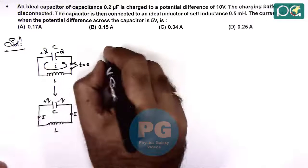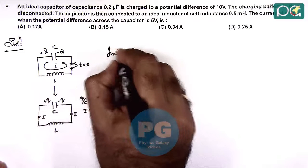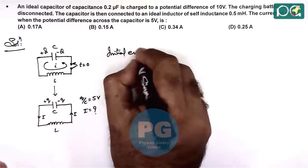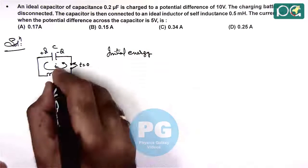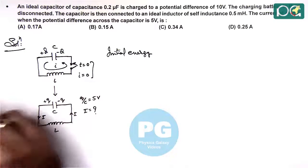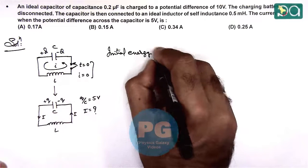Initially, we calculate the energy in the capacitor because initially the current was 0 at t equals 0. We find the initial energy in the capacitor.